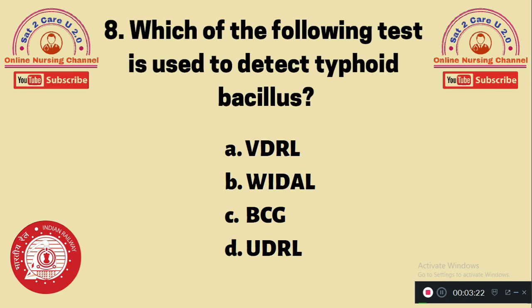Question 8: Which of the following tests is used to detect typhoid bacillus? A. VDRL, B. Widal, C. BCG, D. UDRL. The Widal test is used to detect the bacteria which cause typhoid. The correct answer is B.